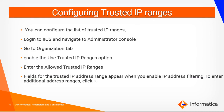Configuring trusted IP ranges: you can configure the list of trusted IP ranges. To do this, login to your IACS orgs and navigate to Administrator console. Go to the Organization tab. Here, enable the Use Trusted IP Ranges option. You can then enter the allowed trusted IP ranges — fields for the trusted IP address range appear when you enable IP address filtering. To enter additional address ranges, click on the plus icon.